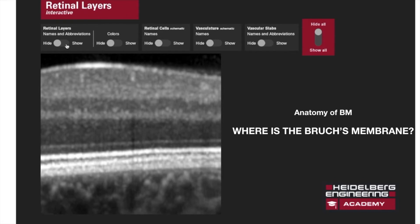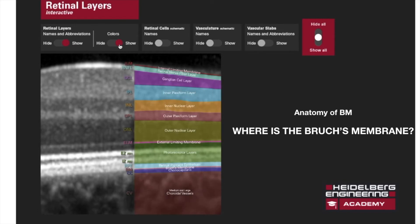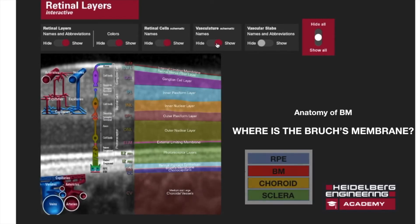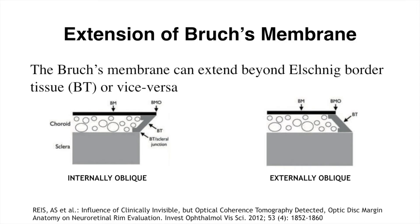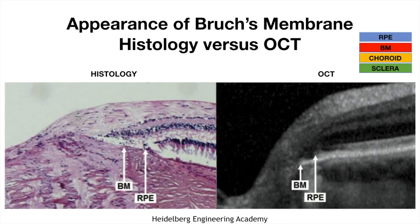Reorienting the anatomy of Bruch's membrane: it lies between the retinal pigment epithelium and the choroid. The RPE lies on top of it and the choroid lies below it. Bruch's membrane has two configurations. If Bruch's membrane extends beyond the Elschnig border tissue, it is called the internally oblique configuration. If the Elschnig border tissue extends beyond Bruch's membrane, it is called the externally oblique configuration.